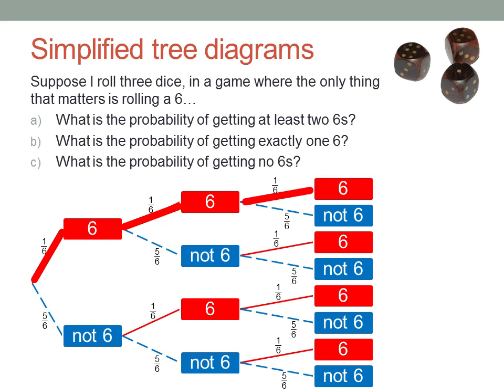So the first way, three sixes, is one-sixth times one-sixth times one-sixth, which is one in two hundred and sixteen. The second, two sixes followed by something else, is one-sixth times one-sixth times five-sixths, or five in two hundred and sixteen.